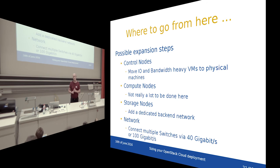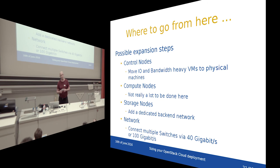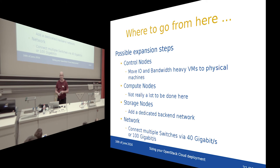Where to go from here? Depending on your needs, you might expand compute nodes with higher-integrated servers and move heavy-load VMs away from the control node layer. Use larger storage nodes, but be careful that impact on total throughput isn't too high. An easy way to increase throughput is to separate the front-end network to the VMs from the back-end network that Ceph uses for rebalancing. And as mentioned, you'll want quicker network switches.